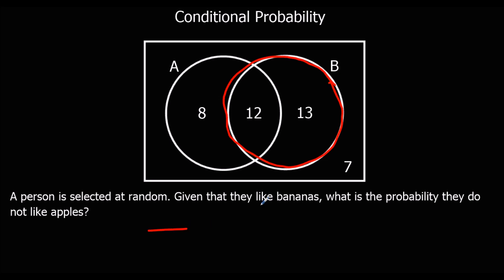It's out of those people that like bananas, because that's been given. So it's out of 25 now. What's the probability they do not like apples? So that's these people. So 13 out of 25.